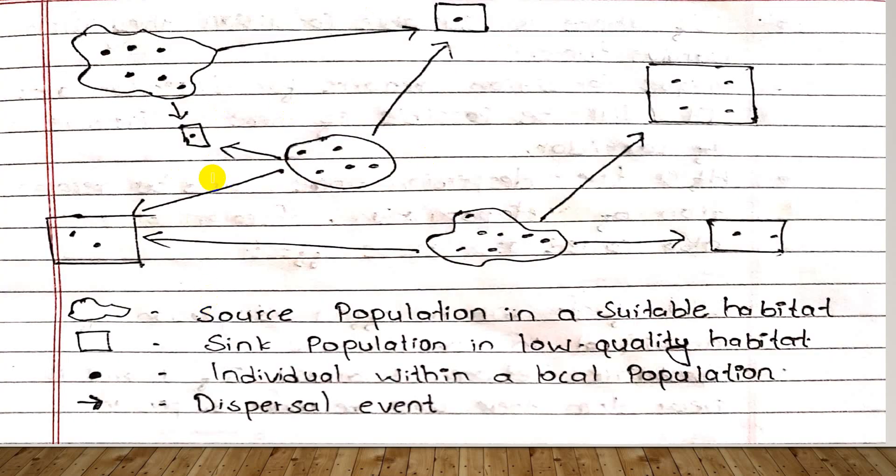From this figure we can clearly understand the concept of metapopulation. Here, let us consider these are the islands, these patches. This zone is source island and this one is sink island. What is source island? What is sink island? Let me clarify.